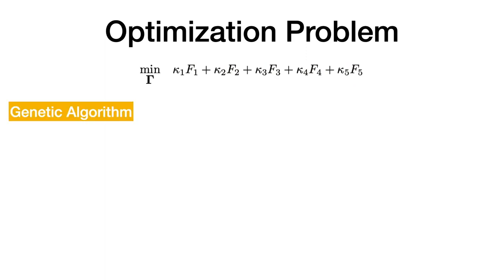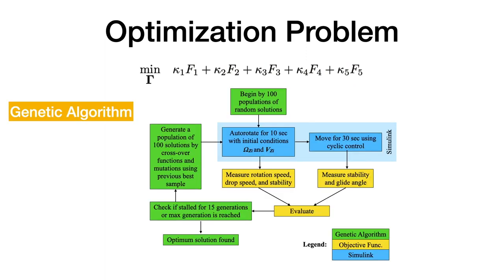We use genetic algorithm in MATLAB to find our optimum solution. Firstly, it begins by generating 100 random solutions. In Simulink setup, these solutions are run through a fixed routine, which includes autorotating for 10 seconds with a fixed initial condition, and then moving for 30 seconds using cyclic control.